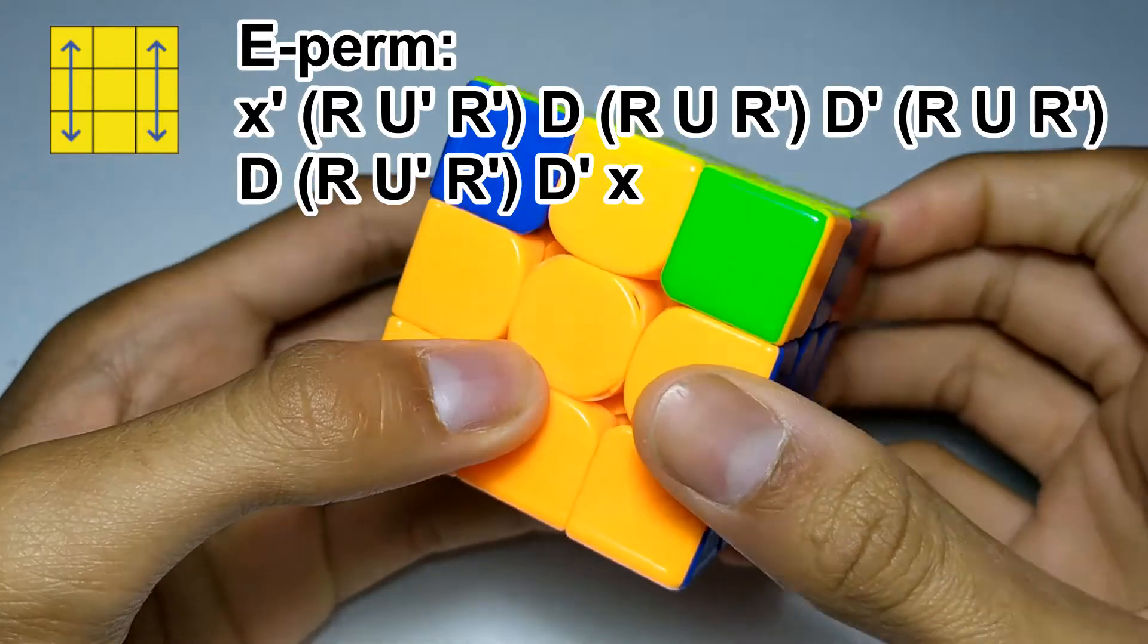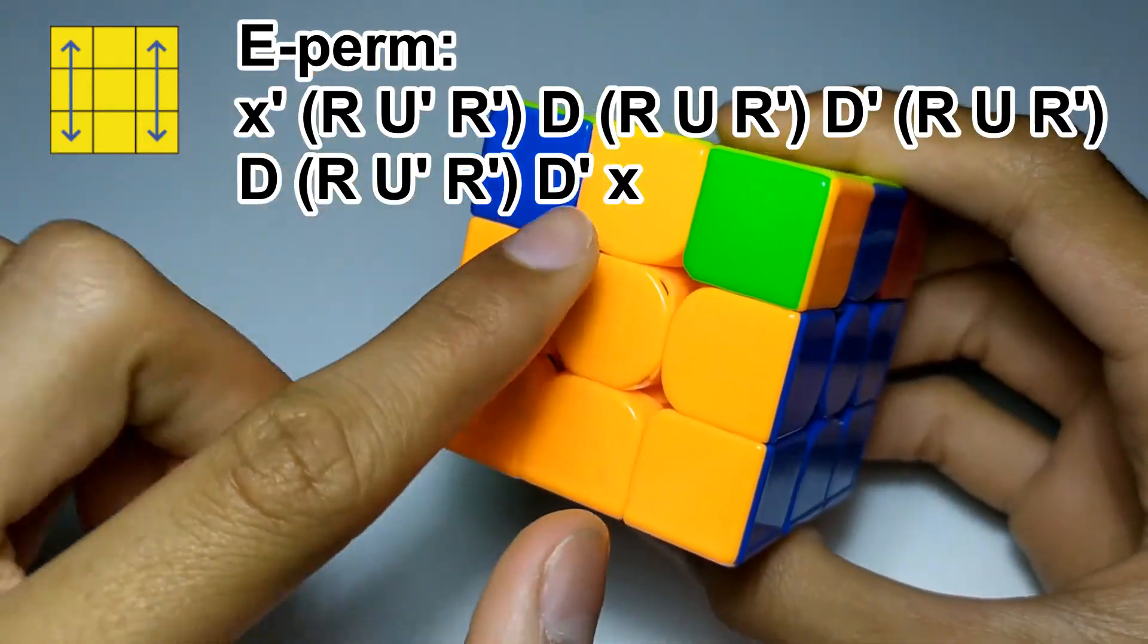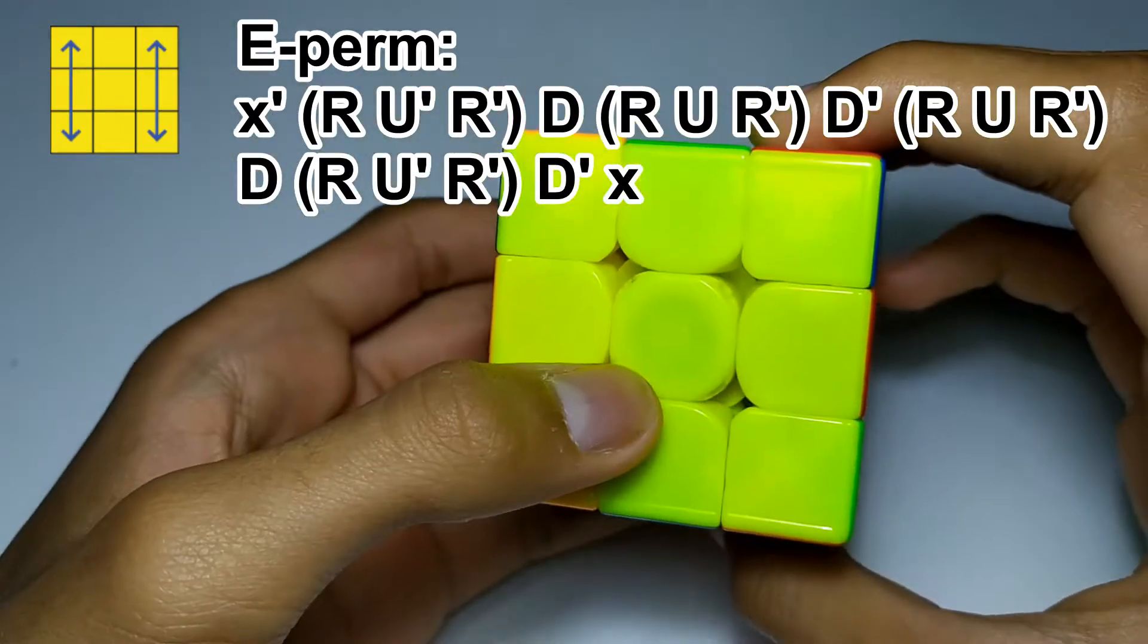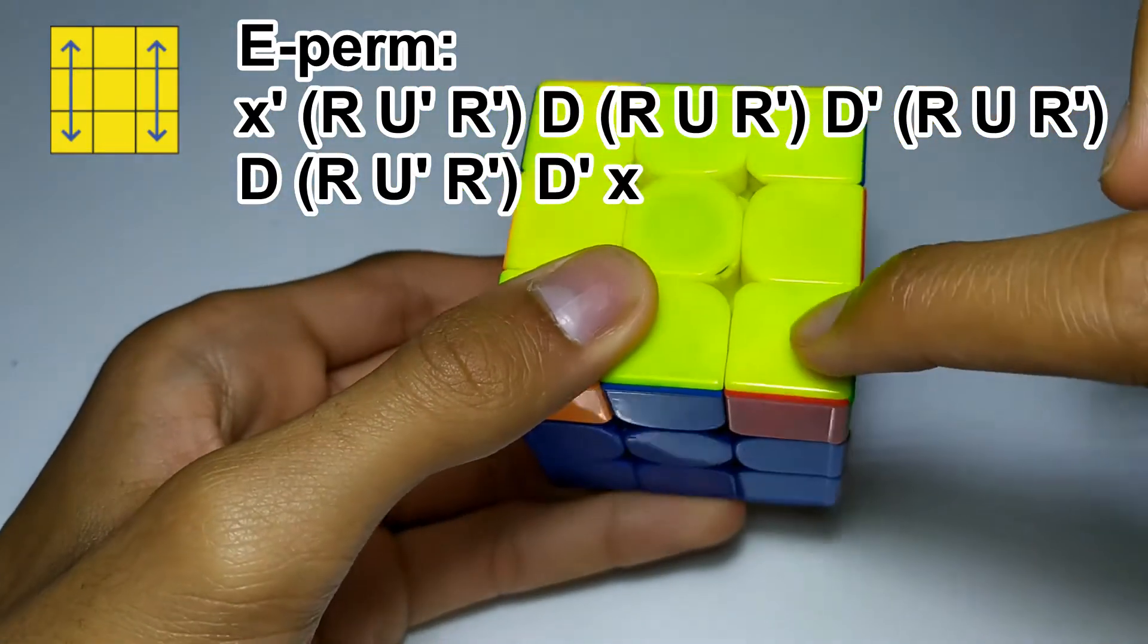The way to recognize which angle to hold it out to do the algorithm is that once you have all of the edges in the correct places you want the pairs of swapped corners to be going vertically.